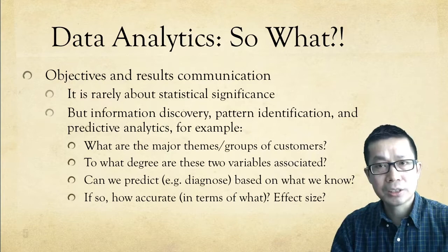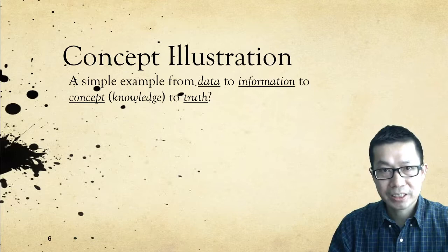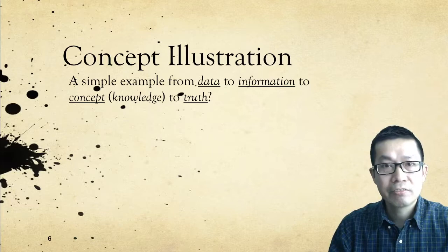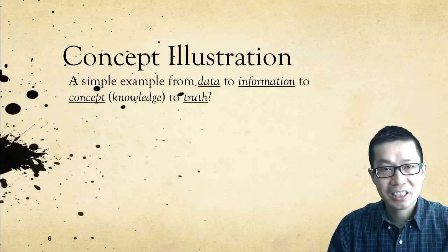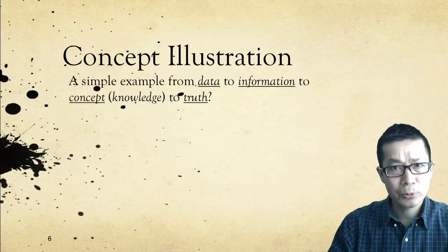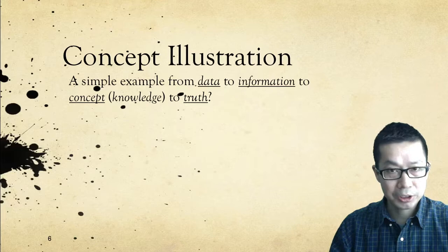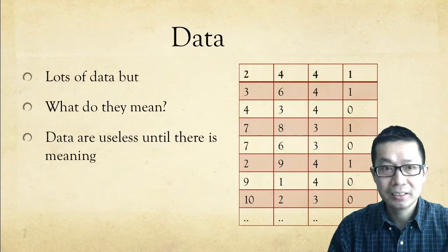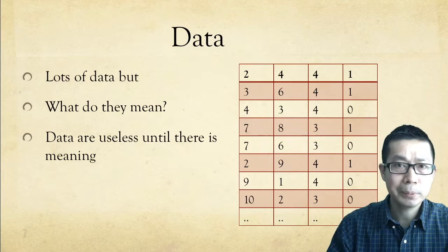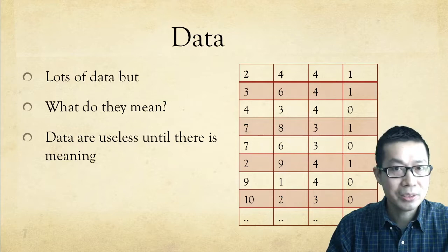Let's use a very simple example to illustrate some related points based on the notion of concept. If we understand the basic goal of data analytics — to identify meaningful patterns, that is information, and discover knowledge or concept — then let's look at how we can move from data to information, to concept or knowledge, and perhaps to truth or not. When you see the data, lots of numbers, they might be useful, but at this point they probably make no sense. Data, no matter how much you have, are useless if no meaning has been attached to them.